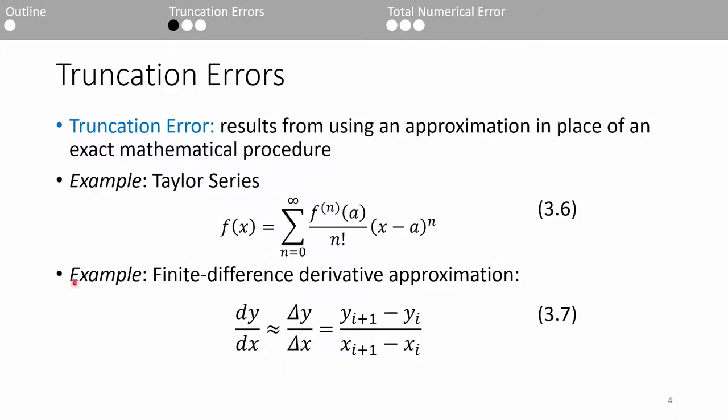Another example is approximating derivatives. We're going to cover this in much more detail later in the course, but here's a preview. Given a dataset, we can approximate the derivative of this data using this formula here. This general class of problems is called a finite difference method, and this specific equation is called a forward difference because it uses the xy coordinate one point in front of our point of interest, i. As you'll see when we study this in more depth, this formula is actually derived from the Taylor series, so it's no wonder it's also a source of truncation error.